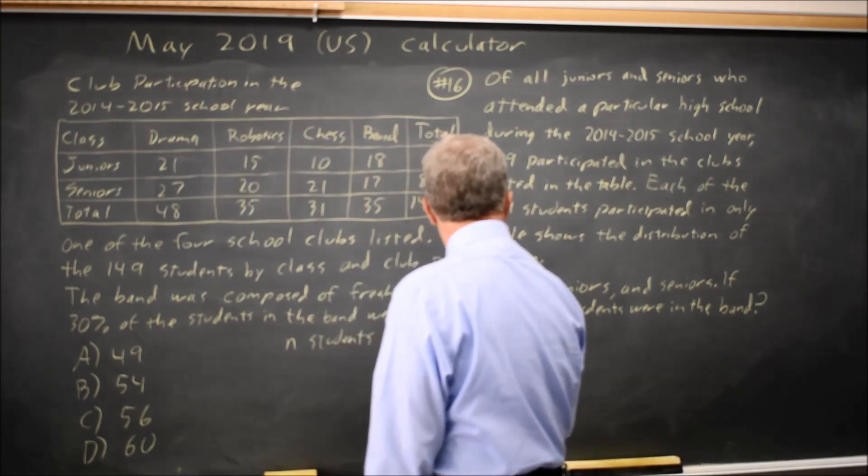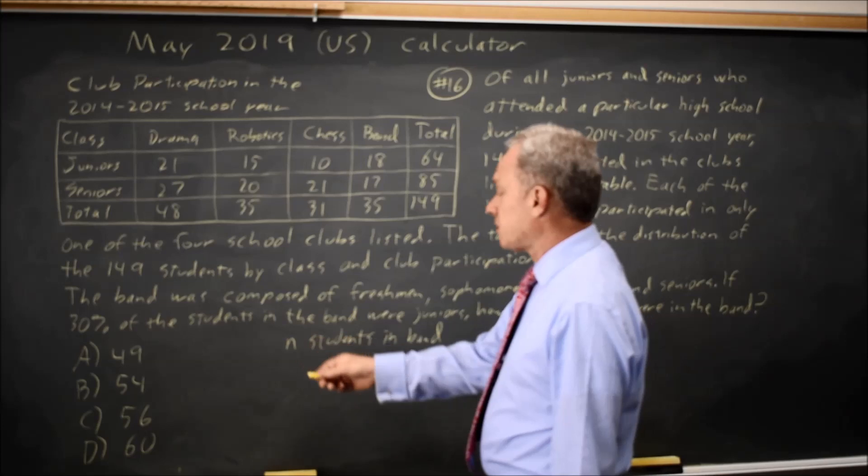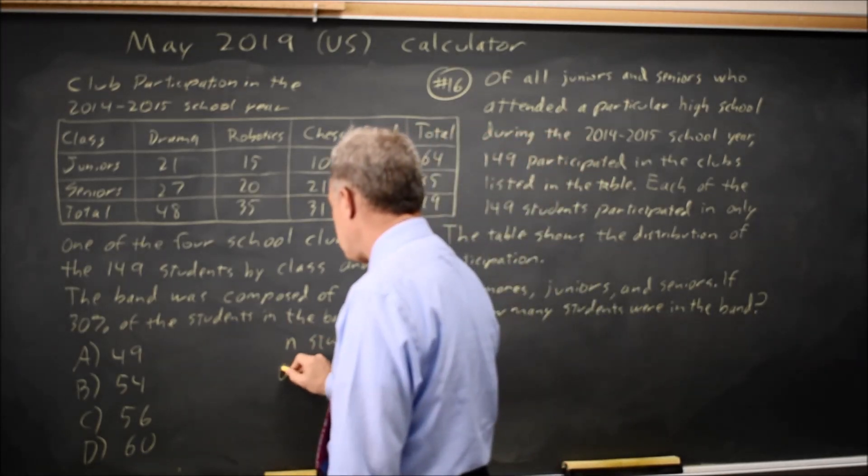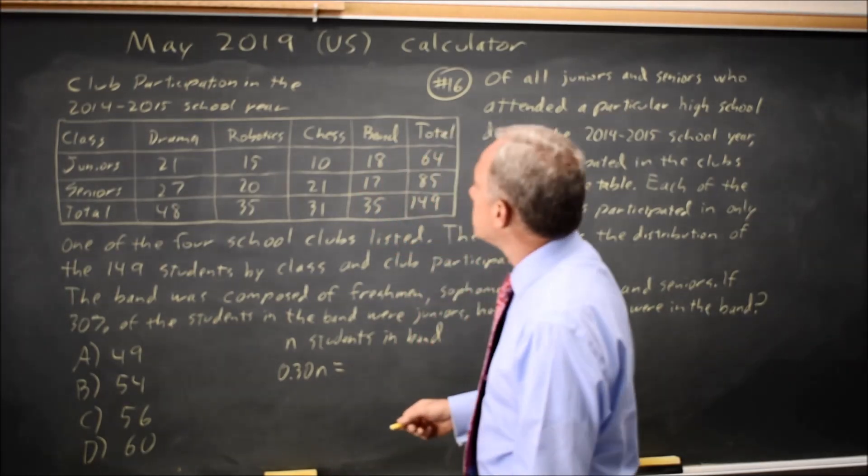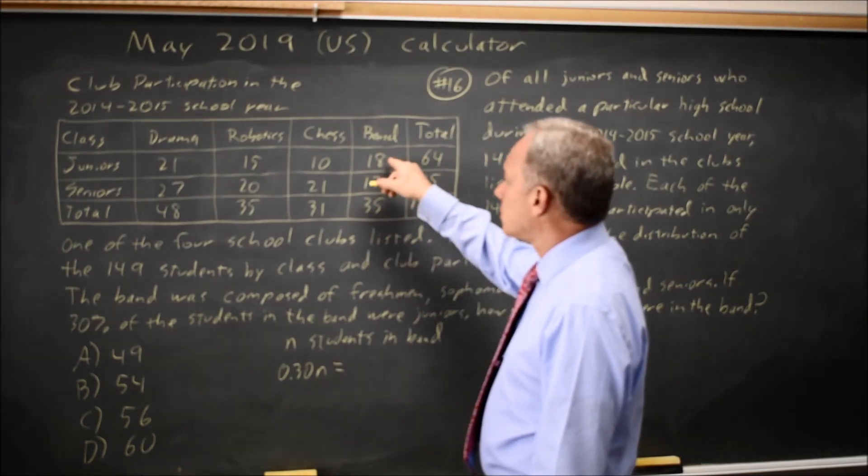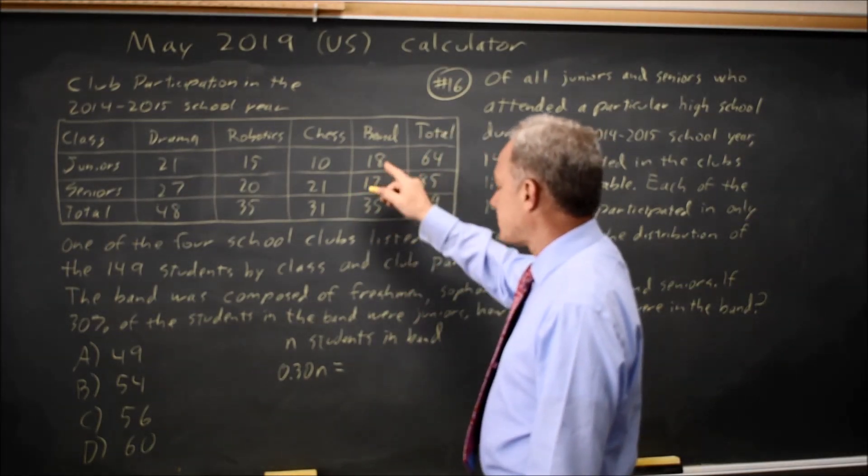this tells us that 30% of the students, so 0.3n, are students in band who are also juniors, so that's 18.